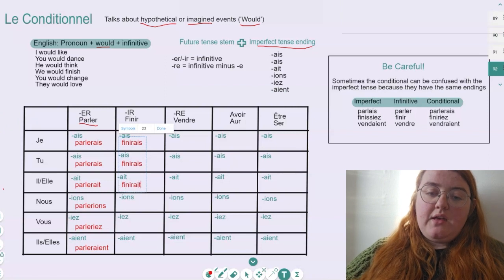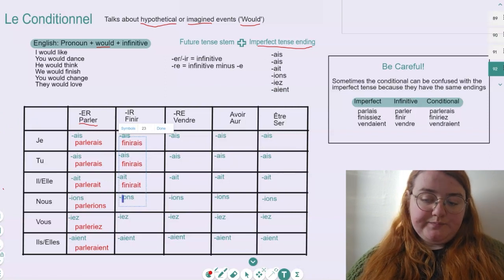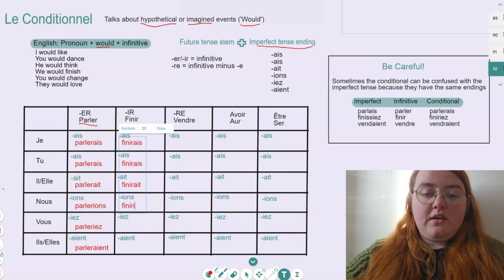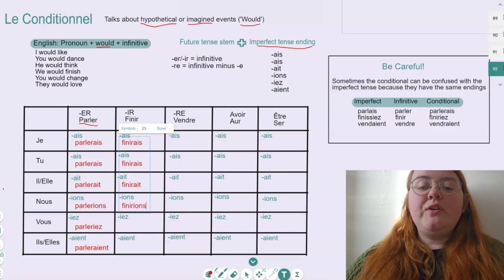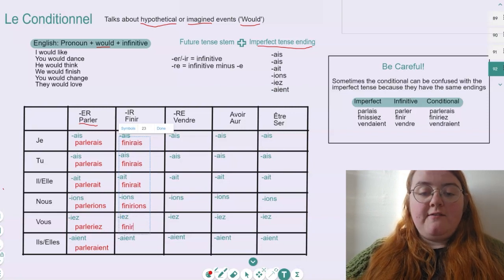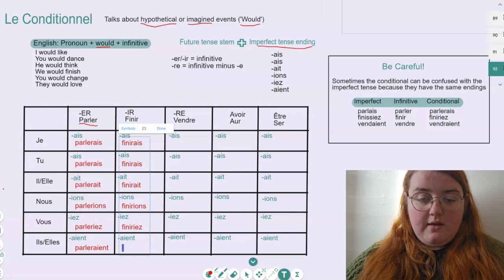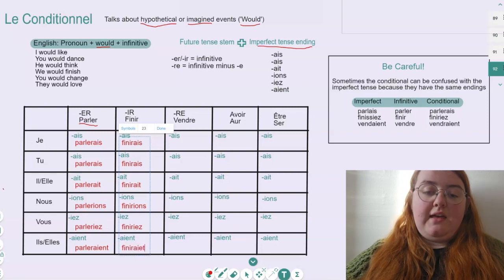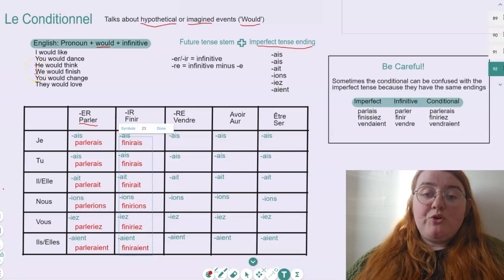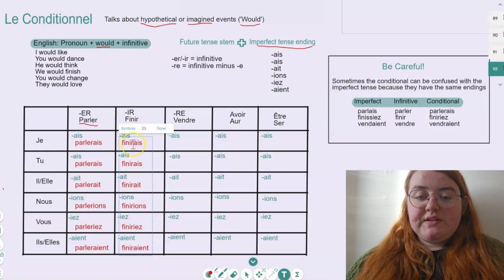This time, finirait with our T. And then we move on to nous finirions, vous finiriez, and finally ils finiraient. So IR and ER verbs are very much the same. We just take our infinitive as the stem and add on the ending.